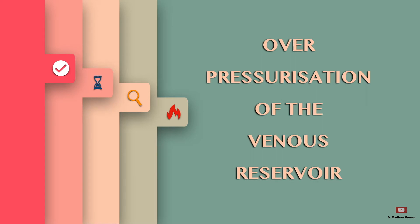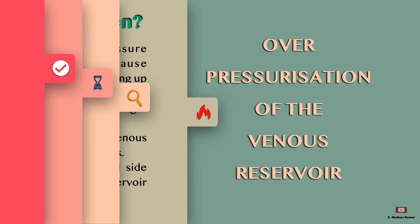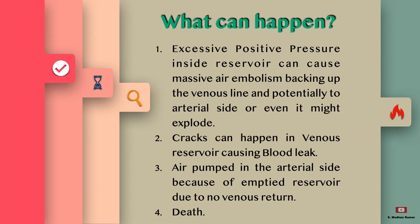Hi all, today we will see over-pressurization of the venous reservoir in the CPB troubleshooting series. What can happen when more pressurization happens in the venous reservoir: excessive positive pressure inside the reservoir can cause massive air embolism, backing way up to the venous line, the cannula, or into the right atrium, and potentially to the arterial side also.